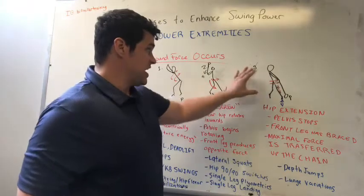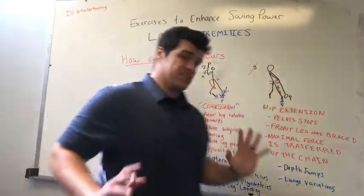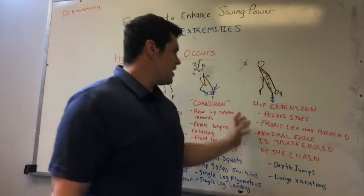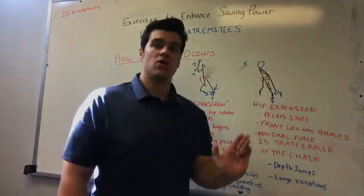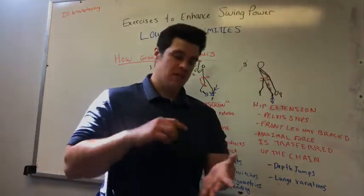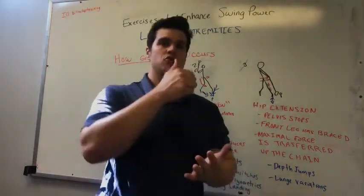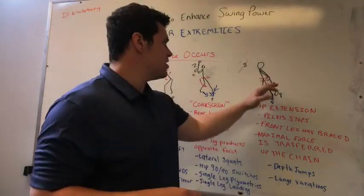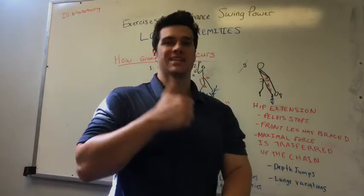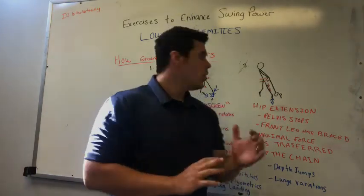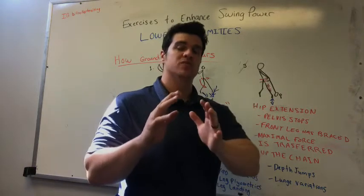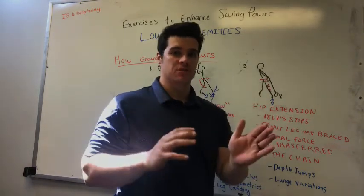The last segment is the overall transfer of energy into the upper extremities, where the front leg has completely straightened out, representing all of the force developed into the ground and transferred straight up the kinetic chain. Force is delivered almost directly up the kinetic chain, whereas before it was creating that corkscrewing action — resisting and pushing in the opposite direction of the back leg.